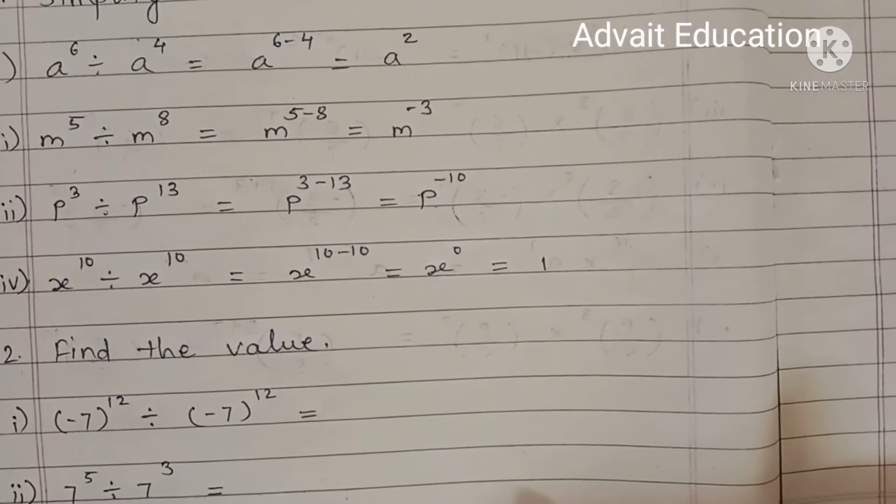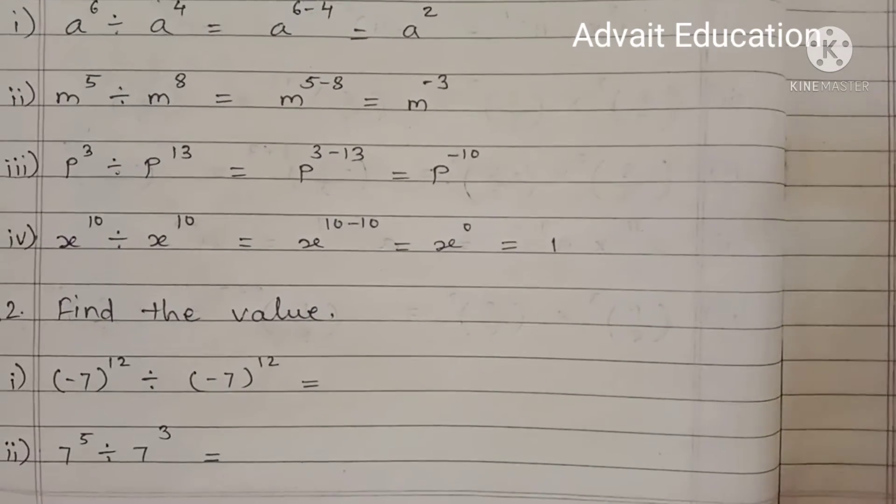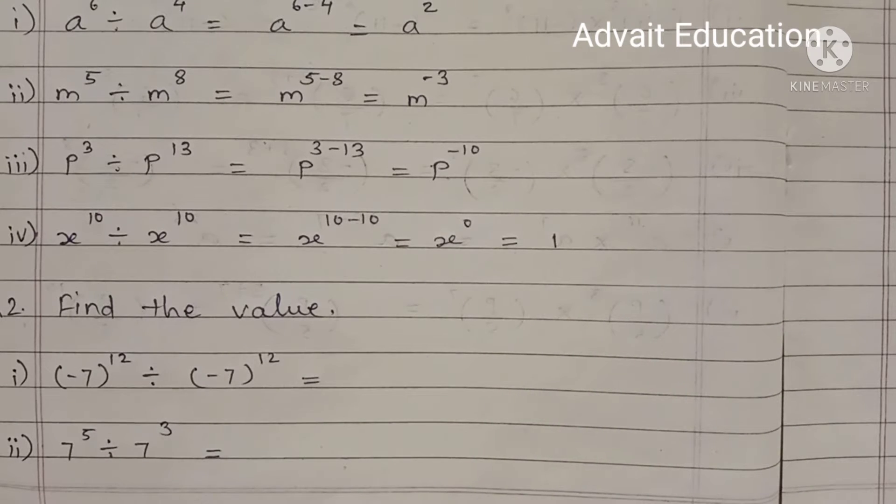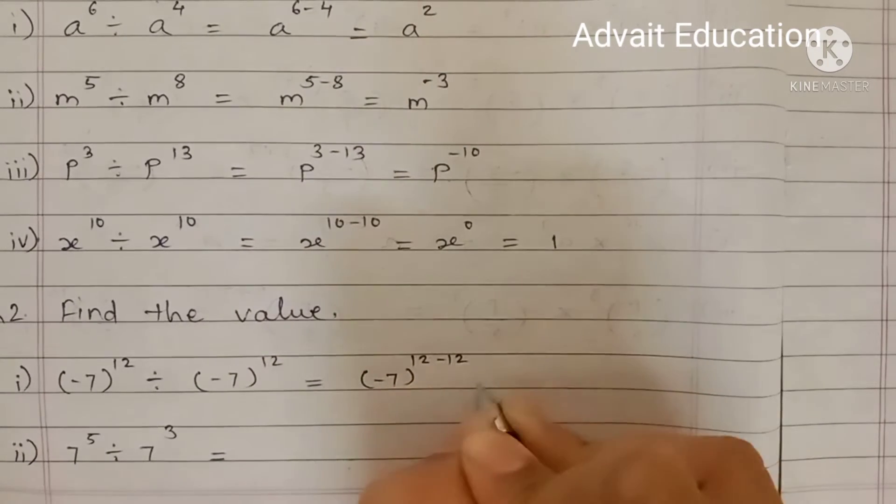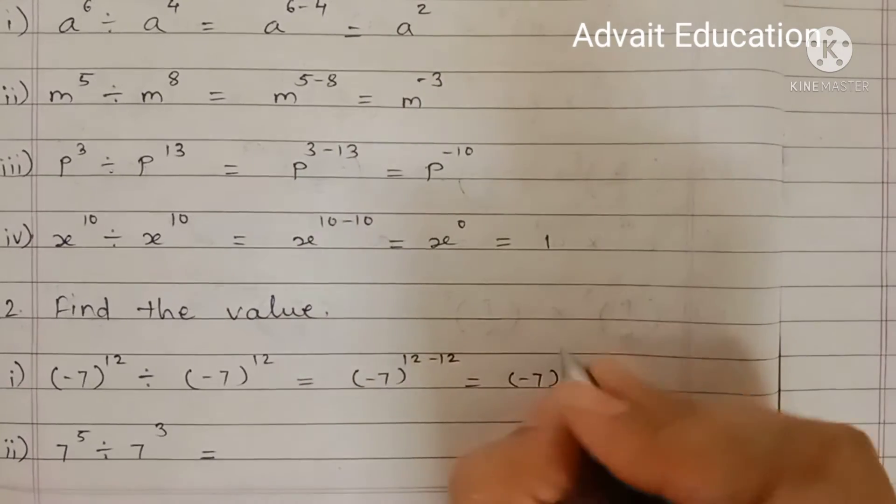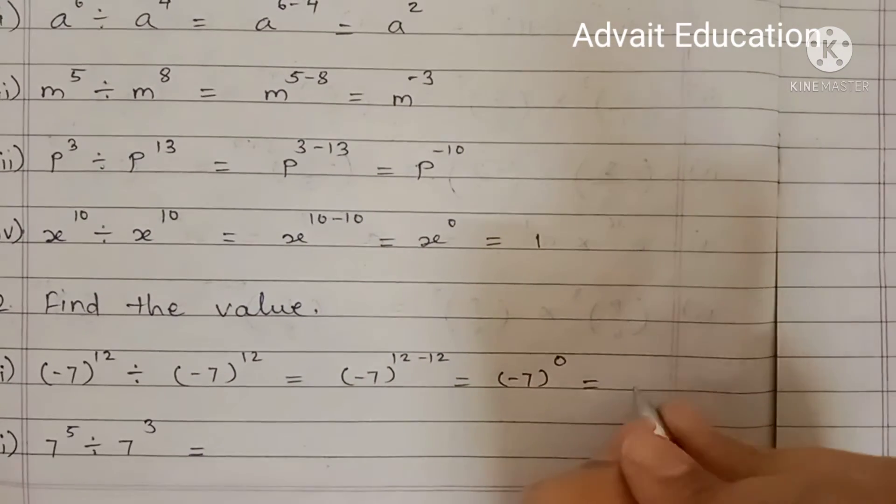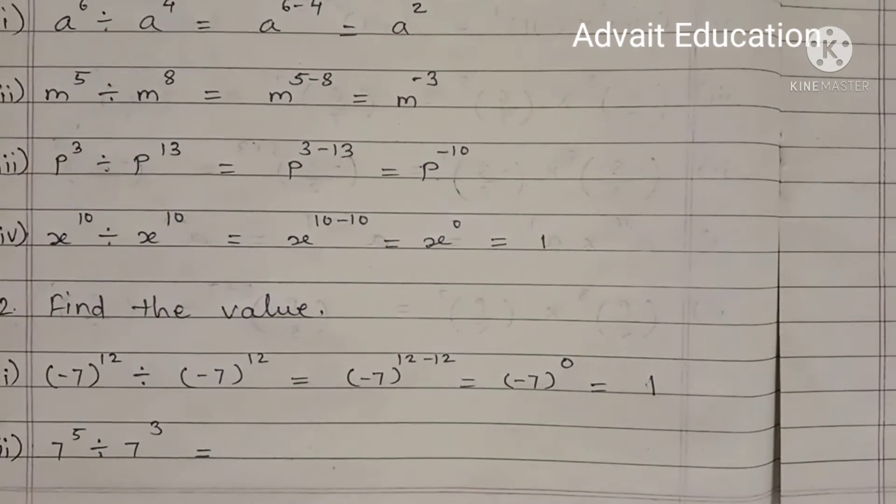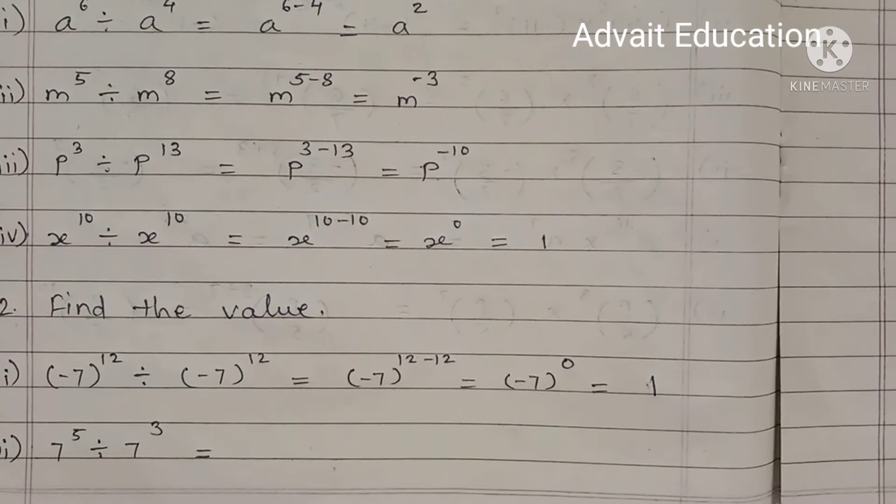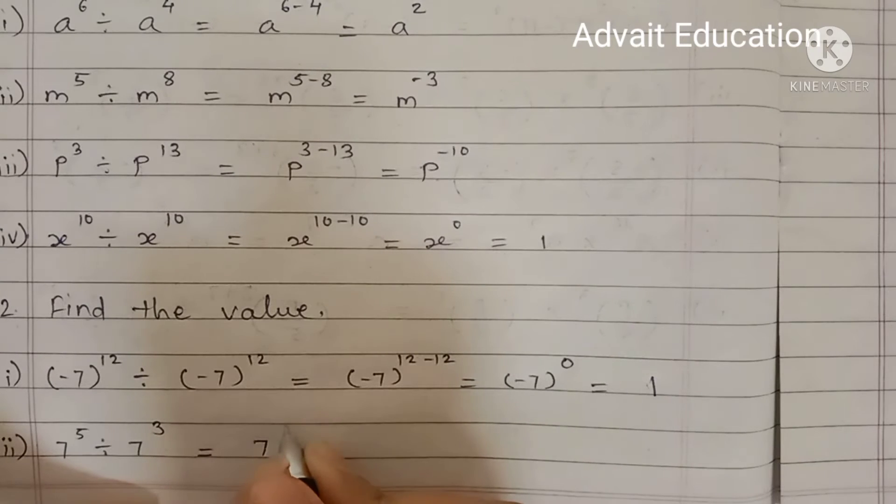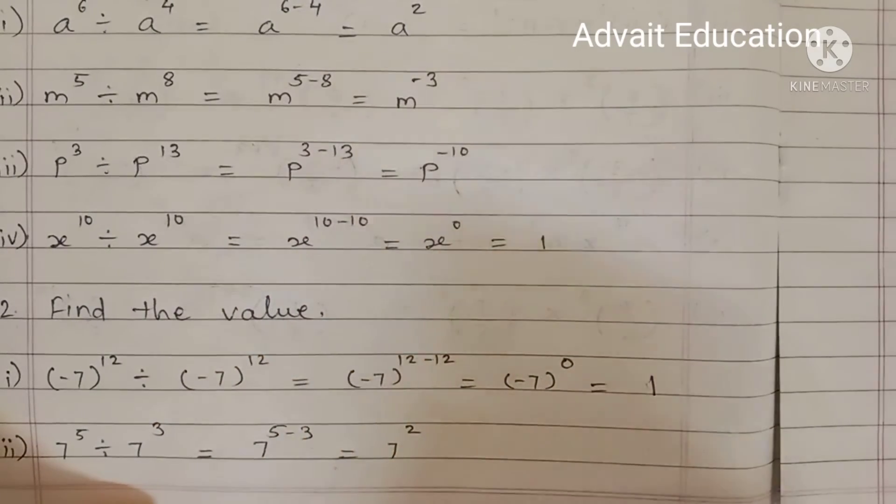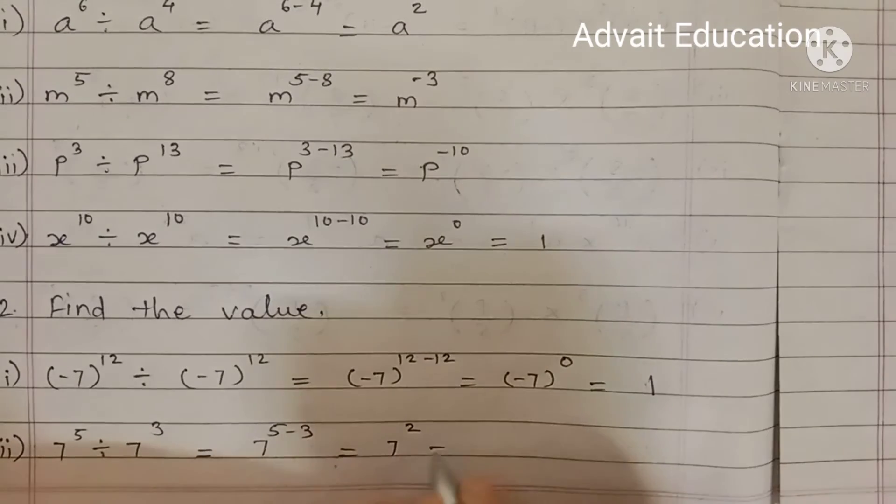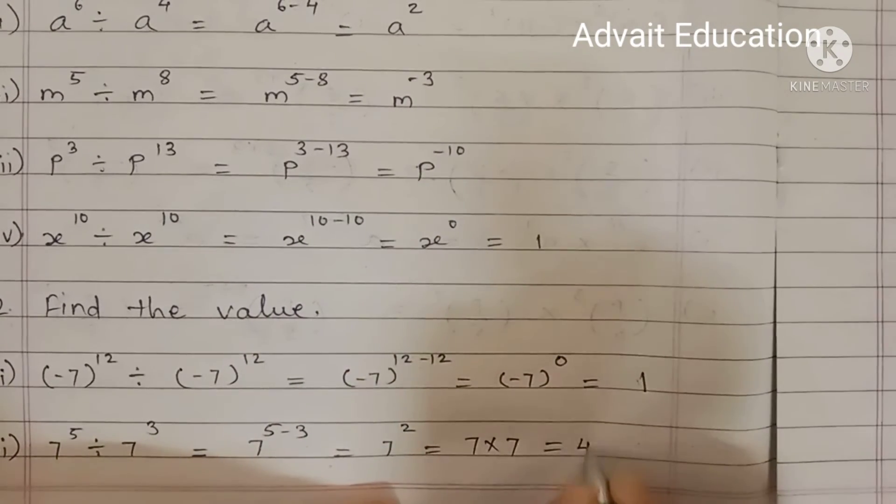Question number 2: Find the value. 7 raised to 5 divided by 7 raised to 3. Means 7 raised to 5 minus 3, means 7 raised to 2. And you can find the value: 7 into 7, 49.